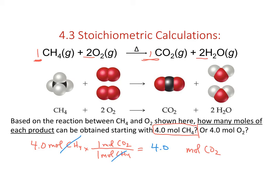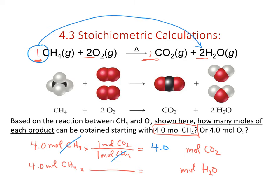Now for water: starting with four moles of methane, I multiply by a conversion factor to convert moles of methane into moles of water. From the balanced equation, for every one mole of methane I put in, I produce two moles of water. Moles of methane cancel out, multiplied by two—I should expect to produce eight moles of water from four moles of methane.